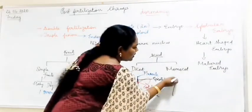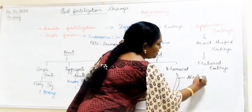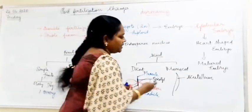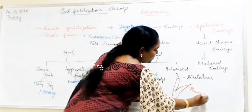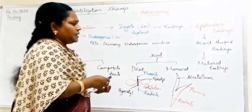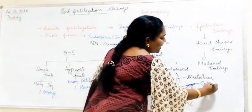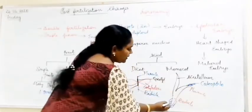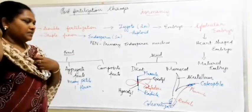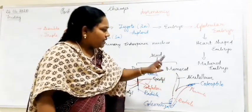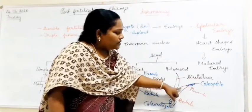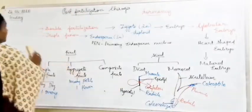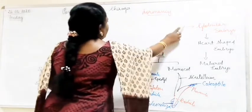In monocot seeds, there is only one cotyledon, and it is given the term scutellum. The plumule has a protective covering called the coleoptile, and the radicle has a protective covering called the coleorhiza. An example of a monocot is grass.